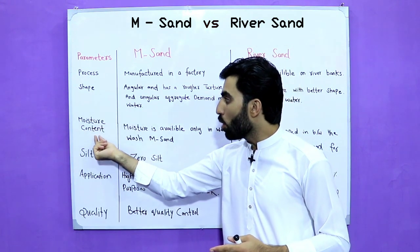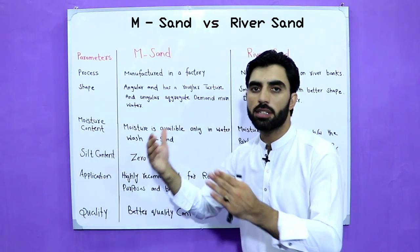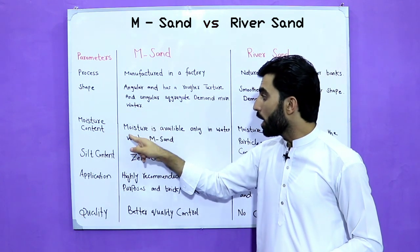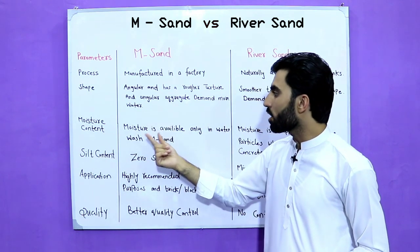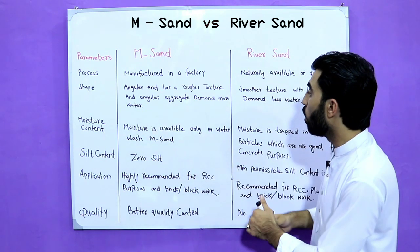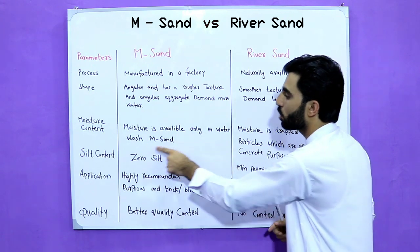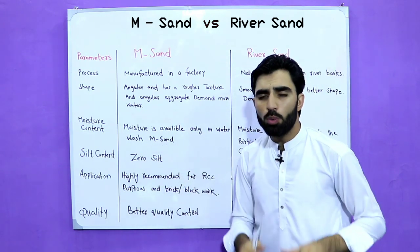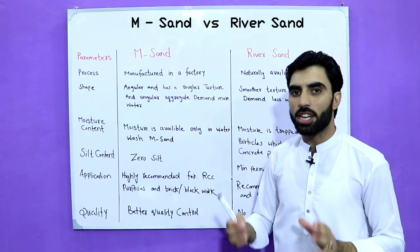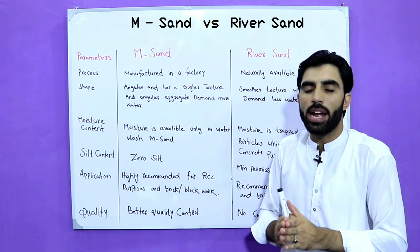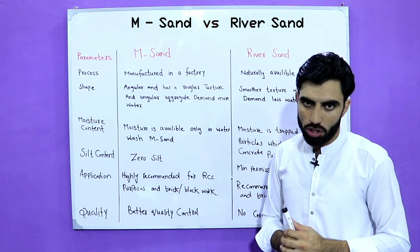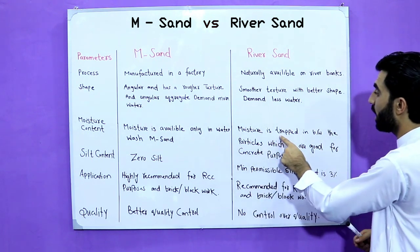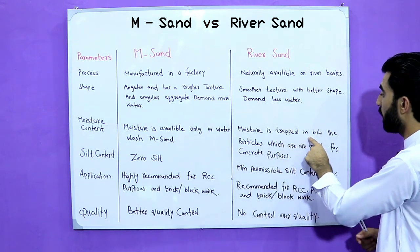The next parameter is moisture content for M-sand and river sand. In manufactured sand, moisture is available only in the water wash. When we wash manufactured sand, the washing process removes the moisture.